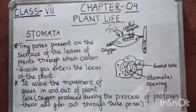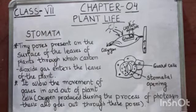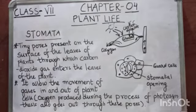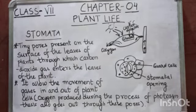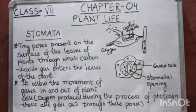Now students, we will continue with the same chapter — Chapter 4, Plant Life. Earlier I told you about what photosynthesis is and the various steps which take place during photosynthesis. Today you are going to learn about stomata, its structure and its working. So let's start with stomata.